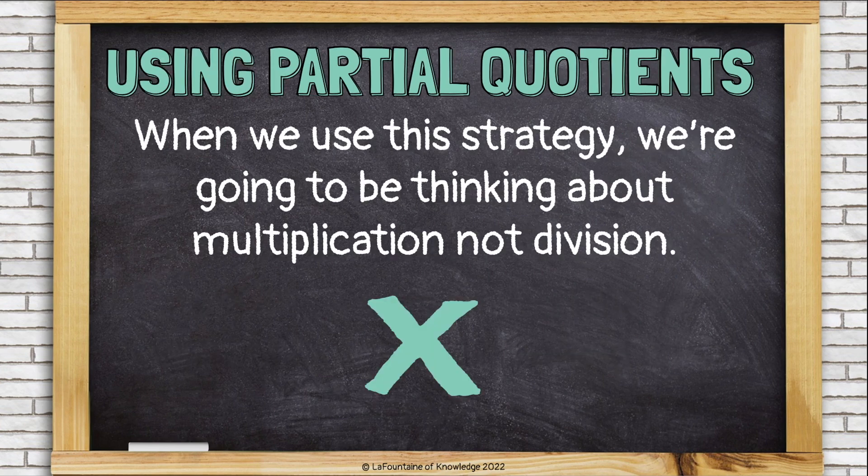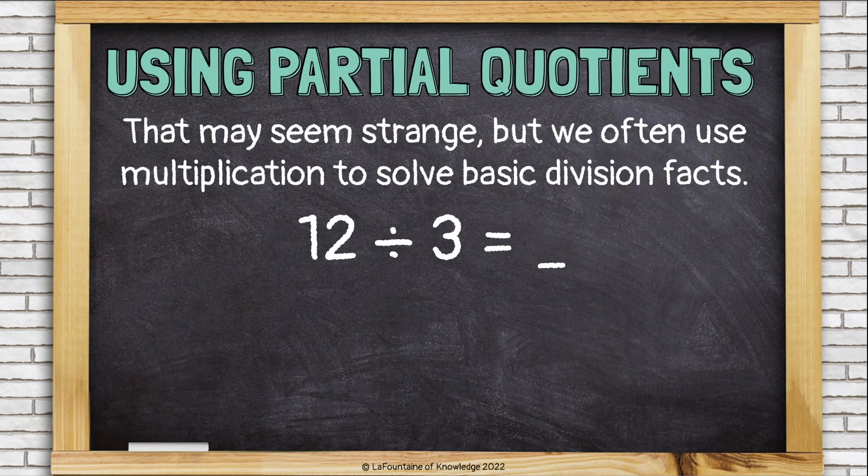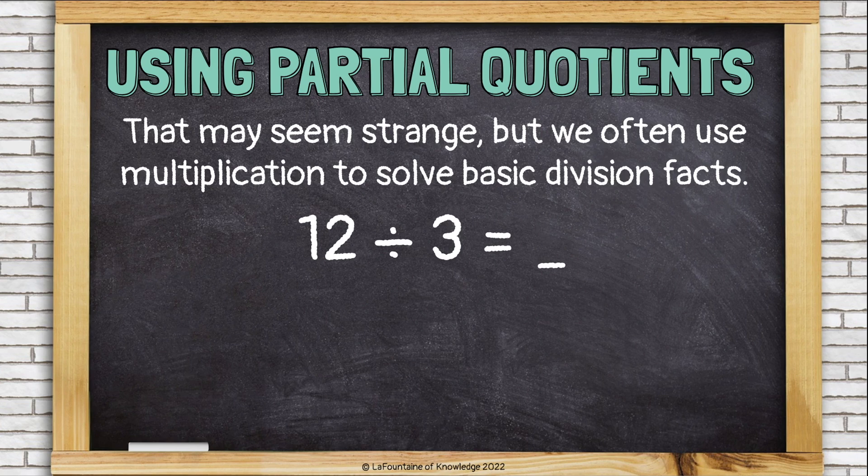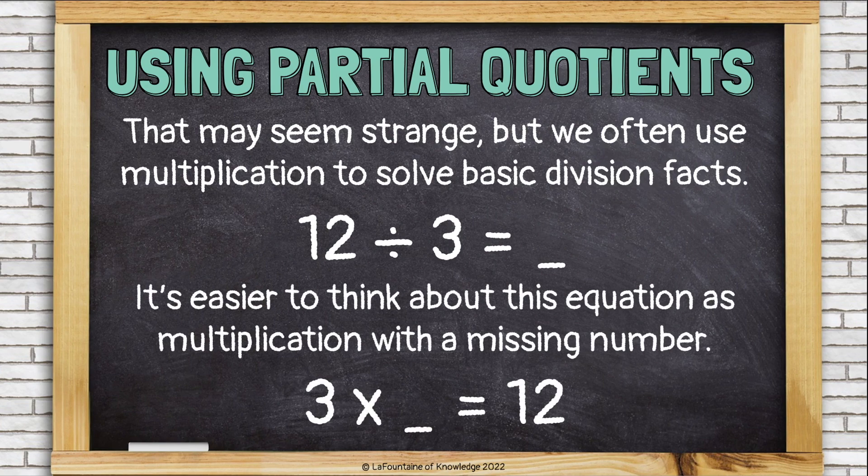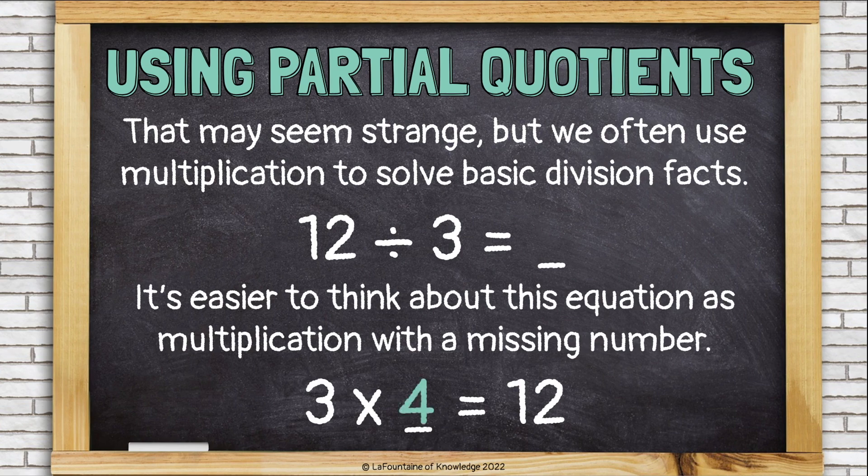When we use this strategy, we're going to be thinking about multiplication, not division. That may seem strange, but we often use multiplication to solve basic division facts, like 12 divided by 3. It's easier to think about this equation as multiplication with a missing number, like this: 3 times what equals 12? 4. So 12 divided by 3 is 4.